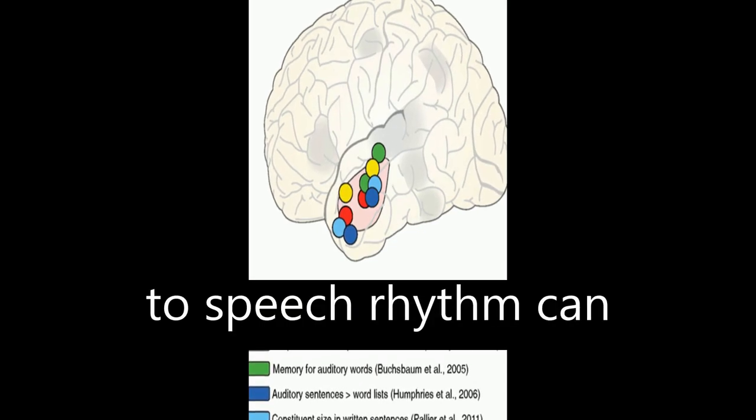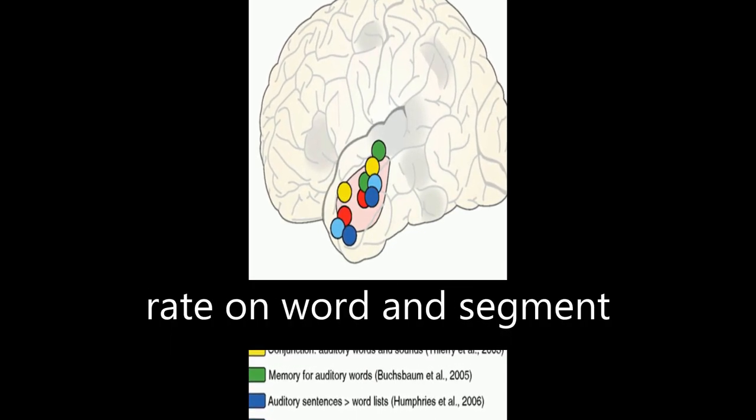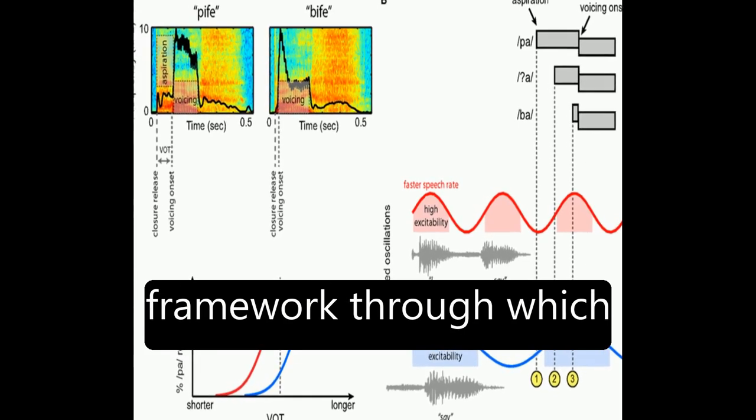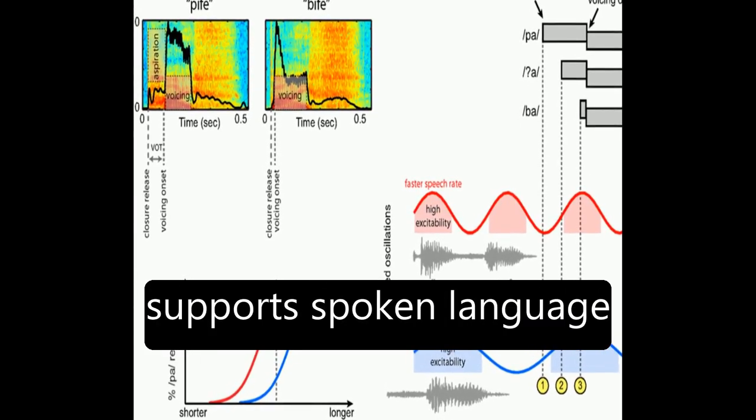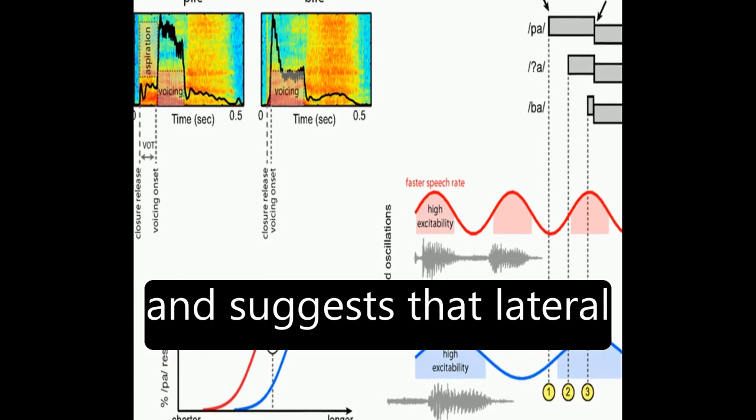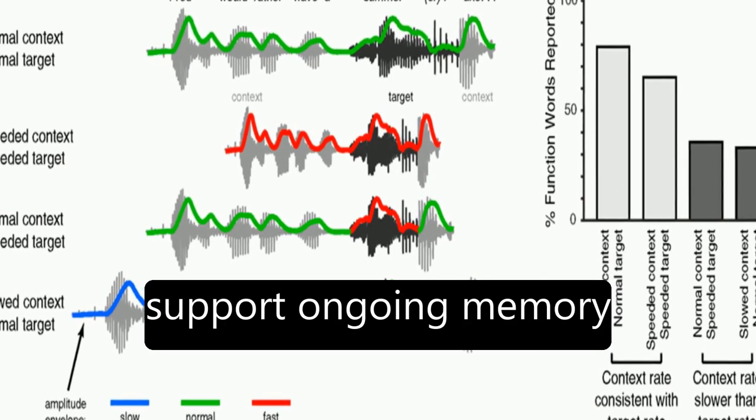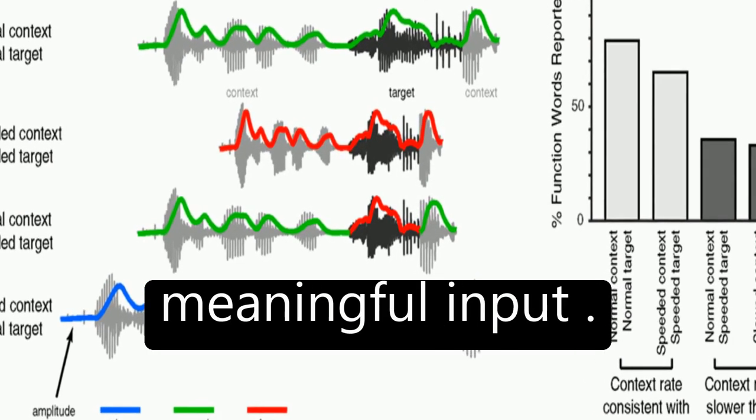This neural entrainment to speech rhythm can explain effects of speech rate on word and segment perception. The article proposes a framework through which this neural entrainment supports spoken language and suggests that lateral anterior temporal cortex functions in a domain general fashion to support ongoing memory and integration of meaningful input.